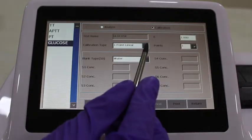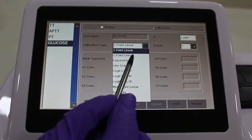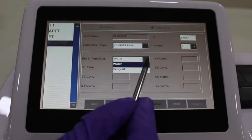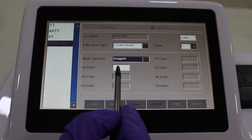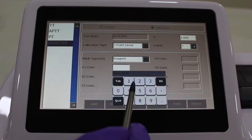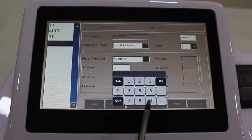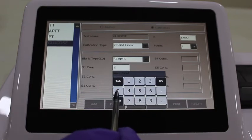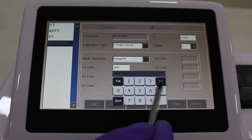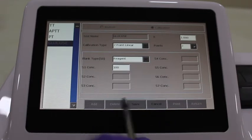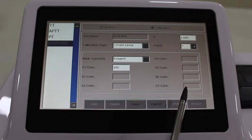Now select calibration option given on the top. Select calibration type as two-point linear and enter reagent blank. For all endpoint reactions, points select two to get one option of standard selected. Enter the standard value, then save the data. Remember to enter reagent blank for endpoint reactions.